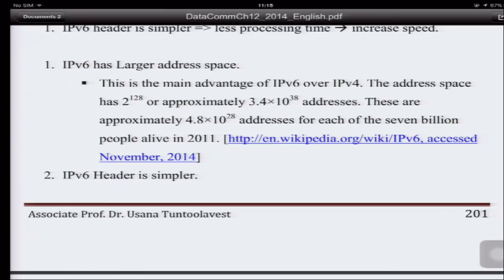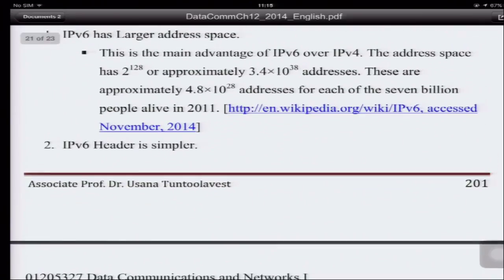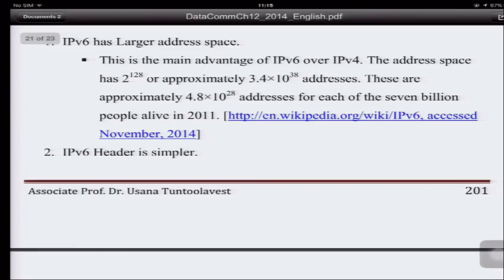Also, if you have heard of the Internet of Things, where you put an IP address on all things — then for one person you may need a lot of internet addresses. You have to put it into your refrigerator, in your smart home. So everything is smart. Your computer, your printer, your lights — lighting in the house and the control of lighting — everything can have an IP address.